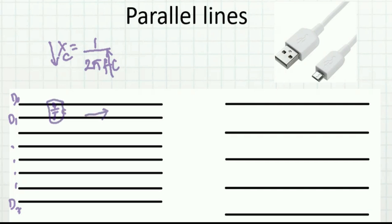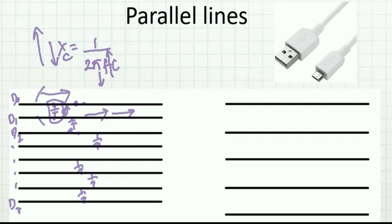If frequency is low, the capacitive impedance Xc is higher, so the lines are distinct and the signal reaches the destination without attenuation. One solution is to move the lines farther apart — increase the distance between D0 and D1 to reduce the capacitance. But this has a disadvantage: it becomes costly in area. Like the USB connector, which has only four pins (VDD, ground, D+, D−) yet is quite wide — if I keep many parallel lines spaced far apart, the connector becomes enormous.